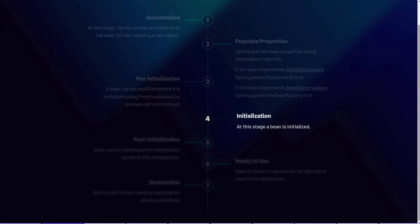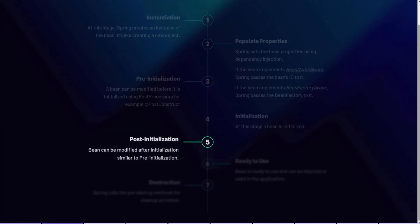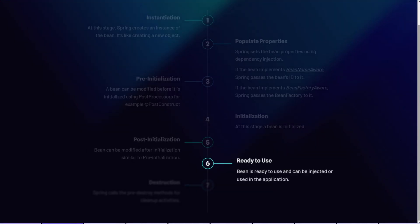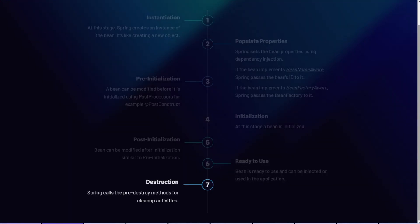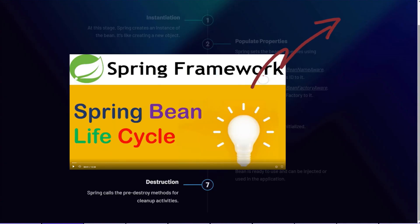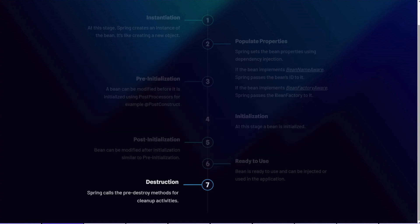During initialization, the bean is prepared for use — this involves setting up necessary properties, connecting to the database, or performing other setup tasks. Similarly, there is a post-initialization stage where the bean can be modified after initialization. After all these stages, the bean becomes ready to use and can be injected into the application. The last stage is destruction: when the application context shuts down, Spring calls the pre-destroy methods for cleanup activities.